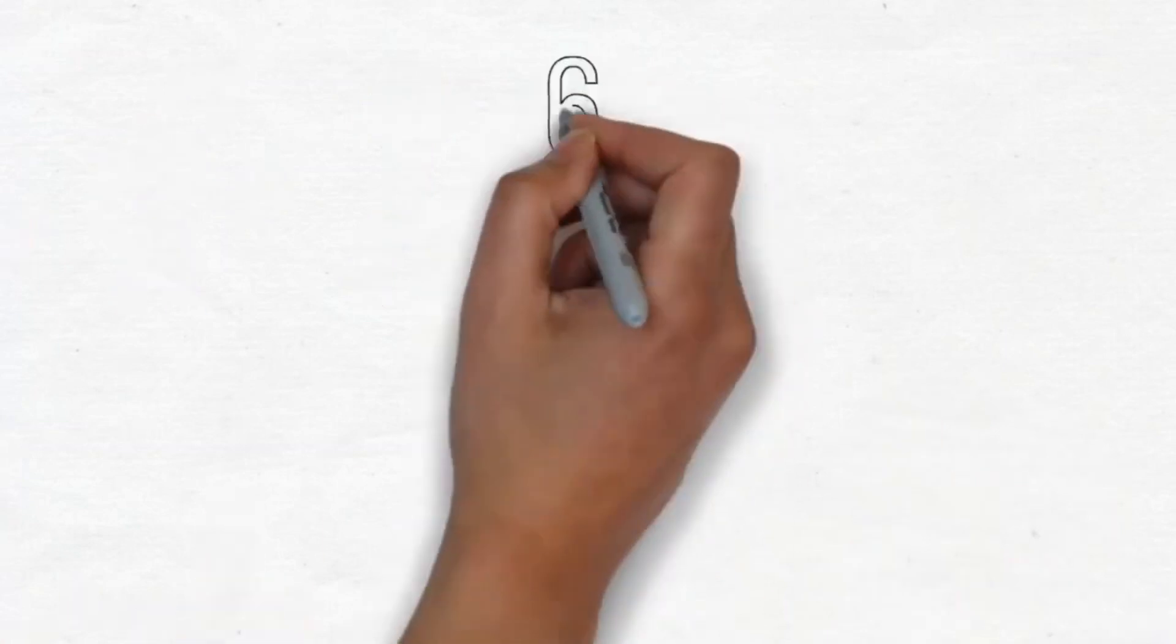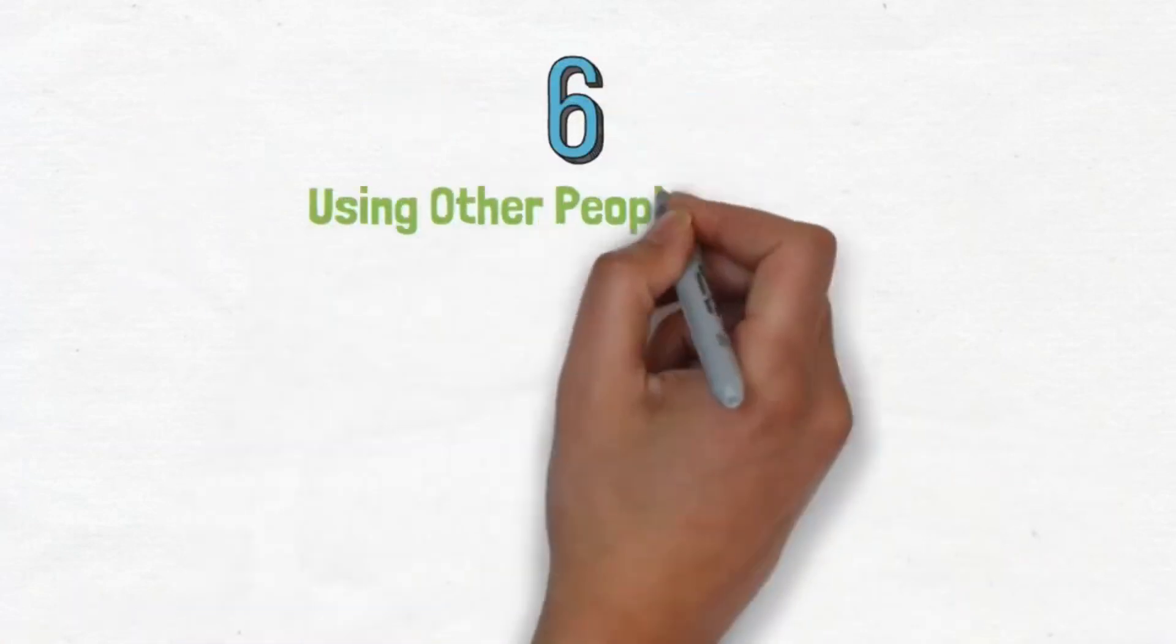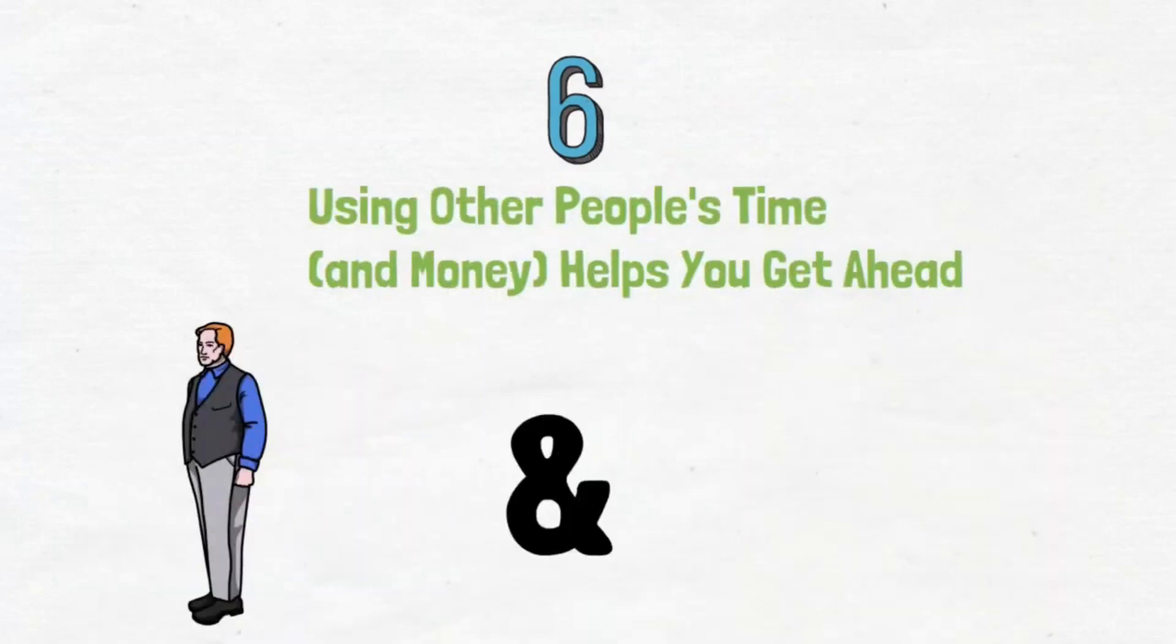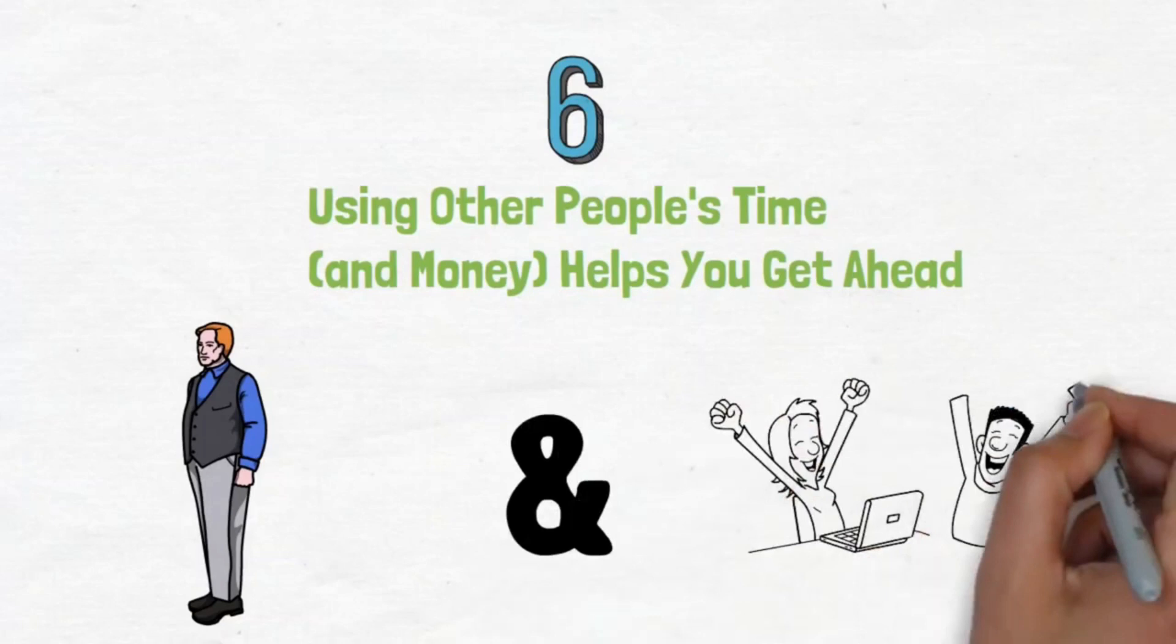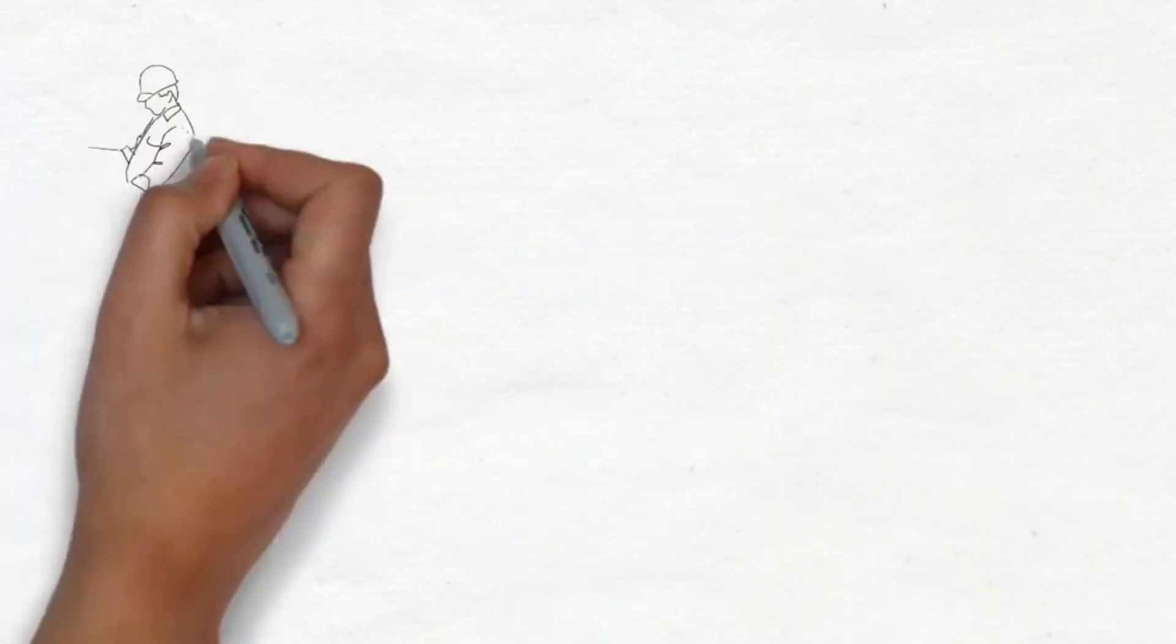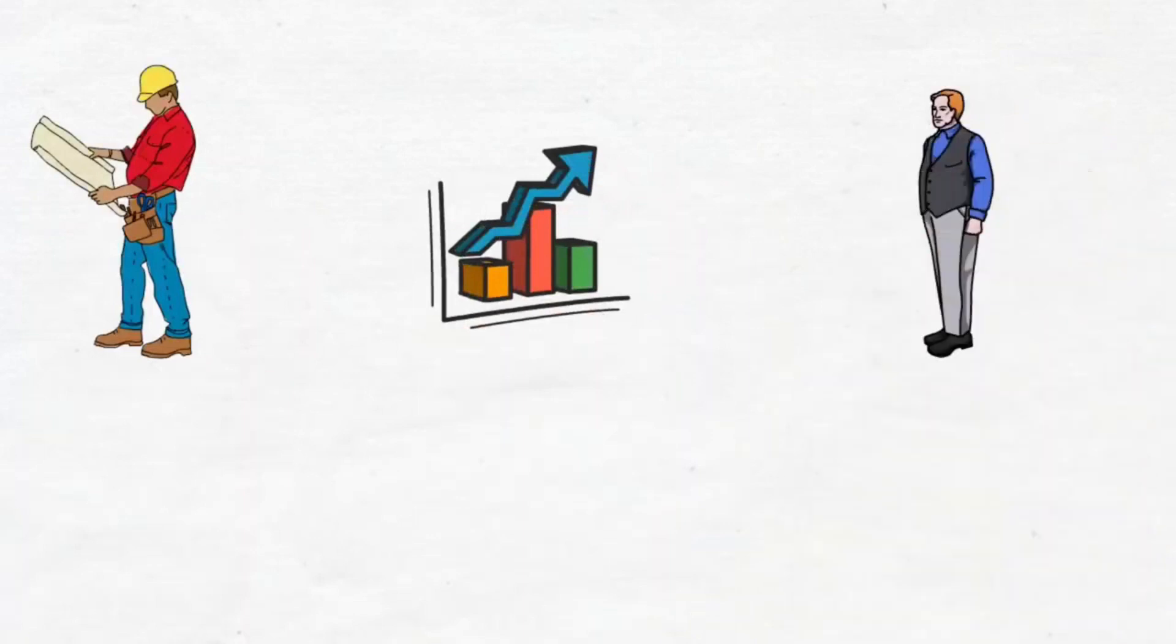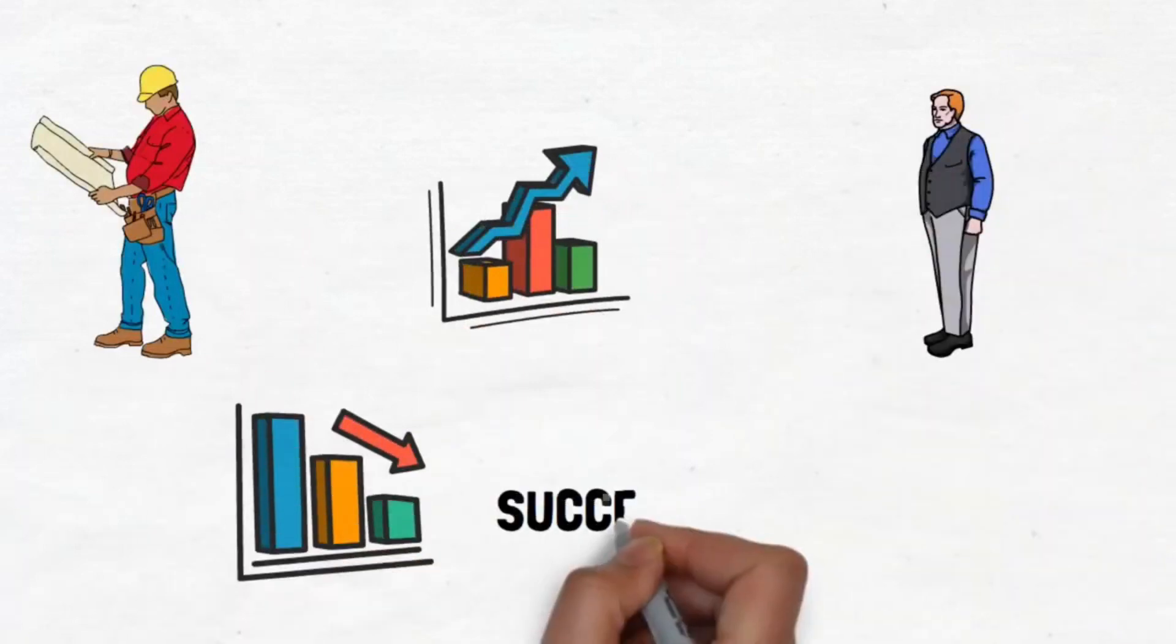6. Using other people's time and money helps you get ahead. Being your own boss and using other people's money instead of your own are two of the best ways to become wealthy. You labor as an employee to benefit your boss, and employing your own capital restricts your success to how much you can personally front.